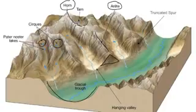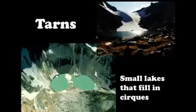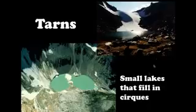Let's look at some pictures. A tarn is simply a small lake that fills into a cirque after the glacier melts. Looking at this picture, there's a lake up here — this is the meltwater from a glacier that used to fill this cirque. So a cirque is the bowl-shaped depression, and a tarn is what's left after the glacier melts: a lake inside a cirque.